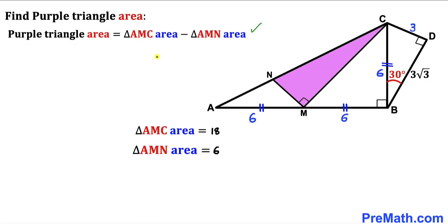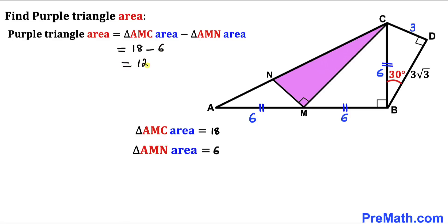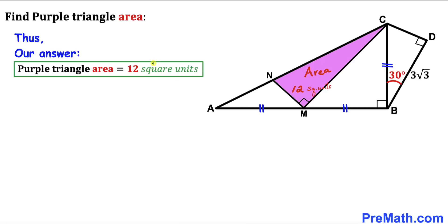Finally, the area of the purple shaded triangle equals the area of triangle AMC minus the area of triangle AMN: 18 − 6 = 12 square units. So the area of this purple shaded triangle turns out to be 12 square units.